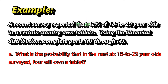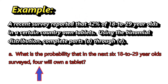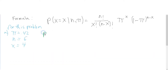Now we need N and X. The question asks: what is the probability that in the next six surveys? So N is equal to 6. We want to know the probability that 4 will own a tablet, so X, the number of successful outcomes, is 4. We write this as P(X=4 | 6, 0.42).